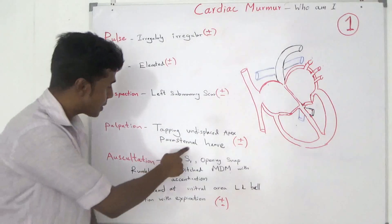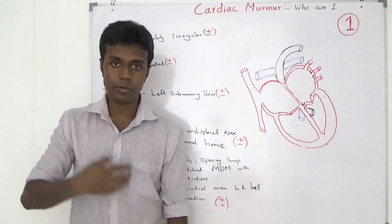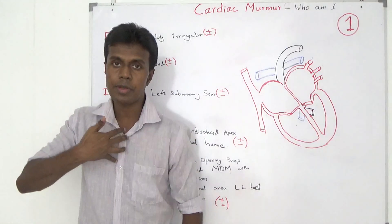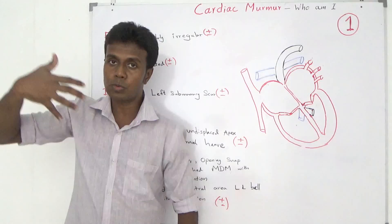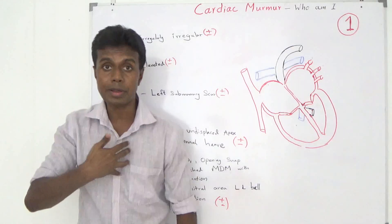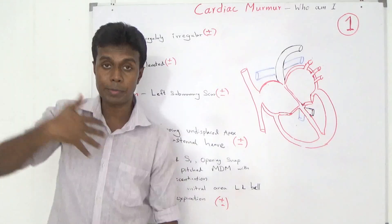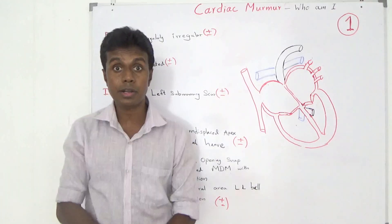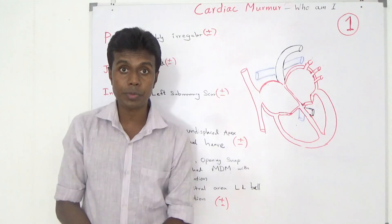There is a parasternal heave. When I palpate for the parasternal heave, it goes out and comes back — goes out and goes back. There is right ventricular hypertrophy.